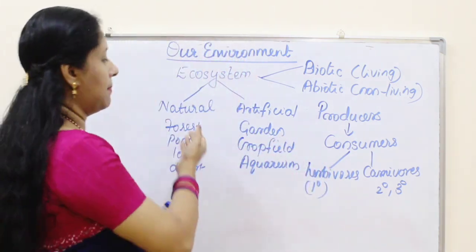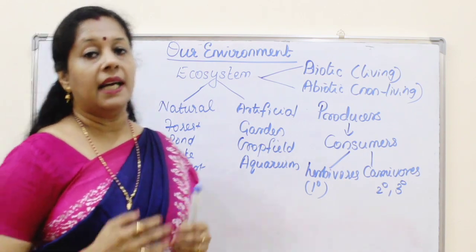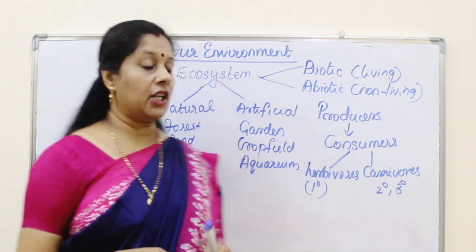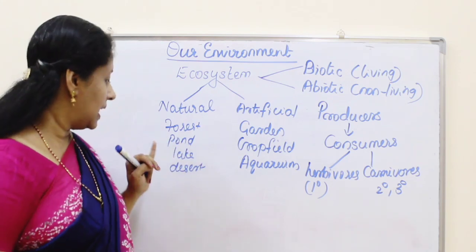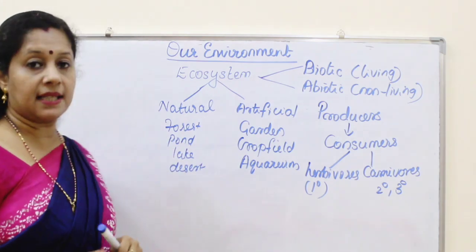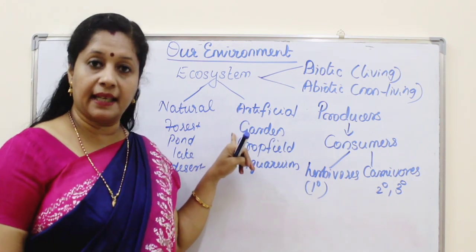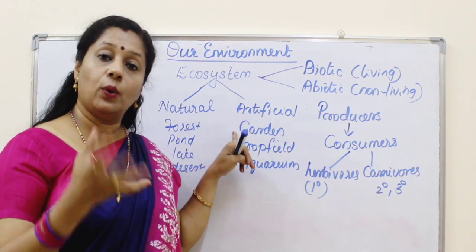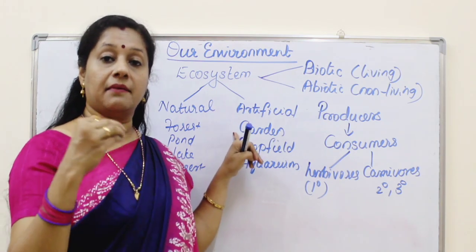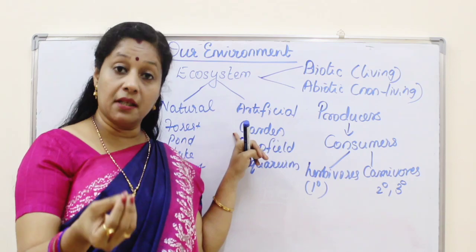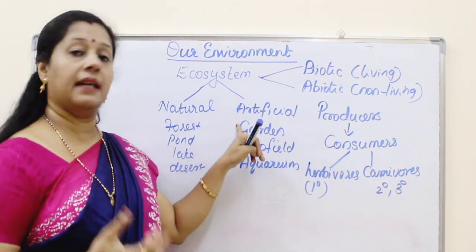Ecosystem can be of two types: natural ecosystem and artificial ecosystem. Natural means it already exists in nature — like a forest, pond, lake, or desert, each is an ecosystem. Artificial means something we create, like a garden. In a garden, microorganisms are there in the soil, plants are there, and plants are visited by insects, birds, dogs, and cats — so it is also an ecosystem.